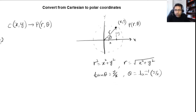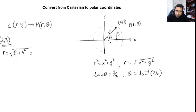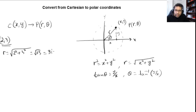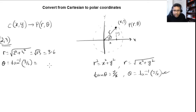For example, given Cartesian coordinate (2, 3), to convert to polar: r = √(2² + 3²) = √(4 + 9) = √13 ≈ 3.6 units. For theta: tan⁻¹(y/x) = tan⁻¹(3/2) = 56.3 degrees.